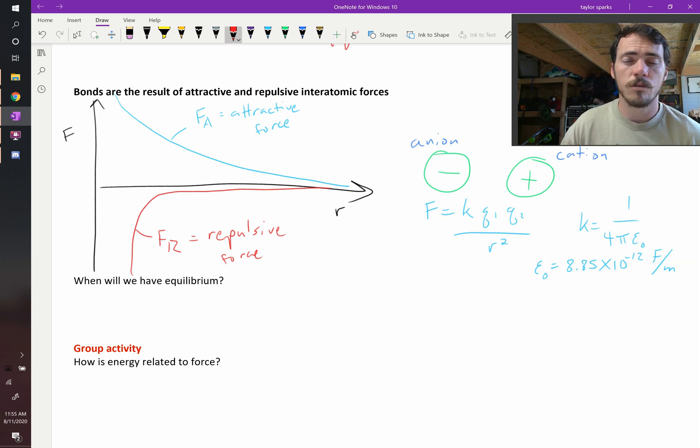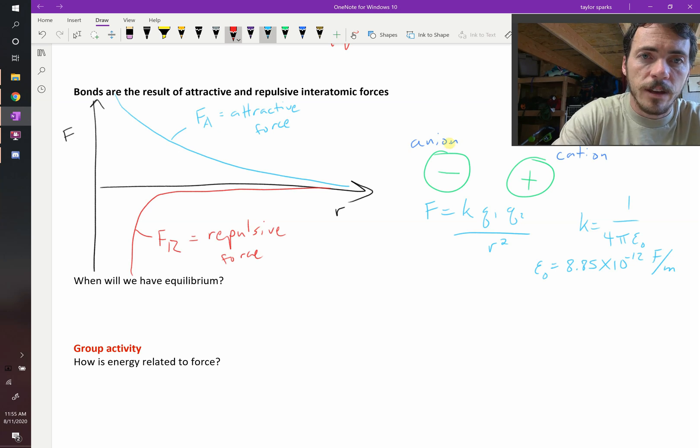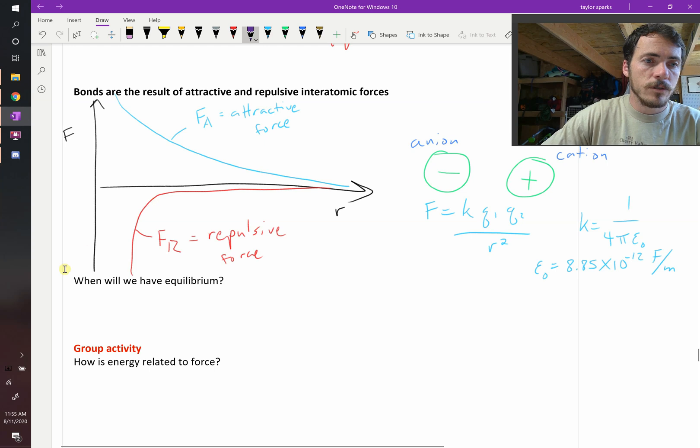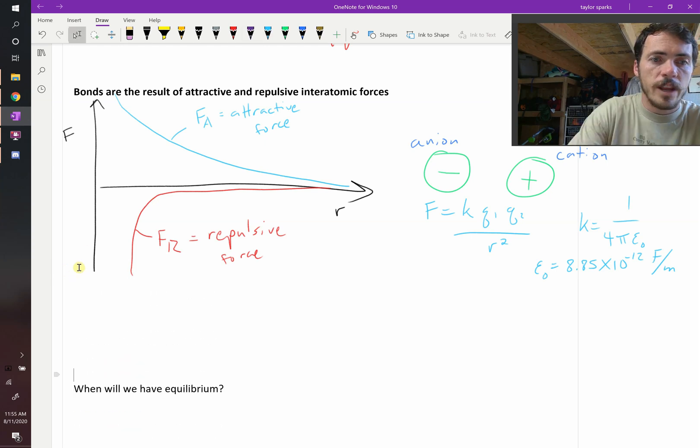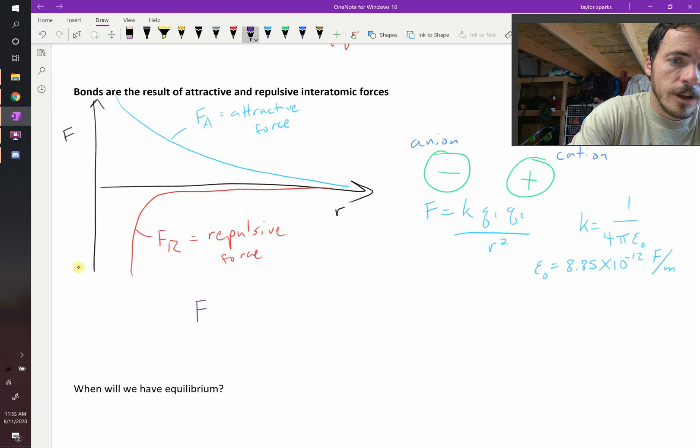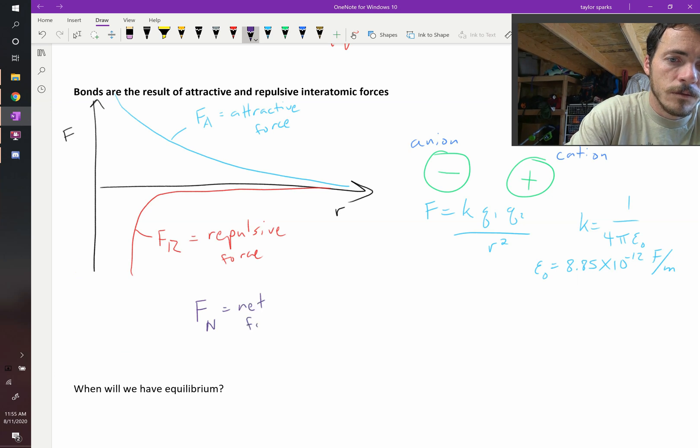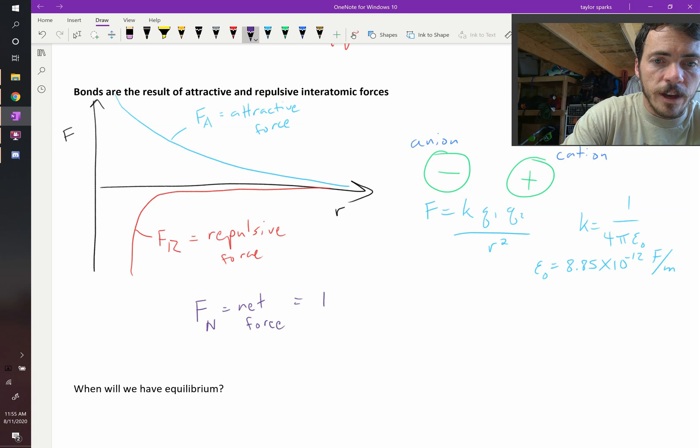So my question for you is this: if you've got an attractive force and a repulsive force, what's the overall net force on this thing? Well, you could just add them. F net—let's draw in purple, let's give ourselves a little more room actually. So the net force, F net, that's going to be equal to F a plus F r.